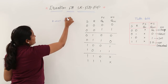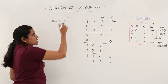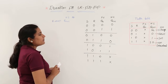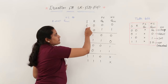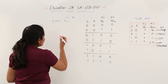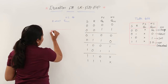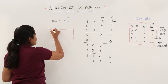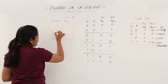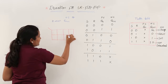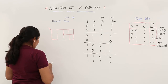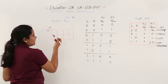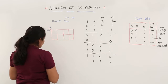I am taking my K-map for QN+1, which is the next state output of the sequential circuit. We have 3 inputs — 2 inputs (S and R) and 1 present state (QN) — so I am considering a 3-variable K-map. In this 3-variable K-map, I am placing SR along one axis and QN along the other.